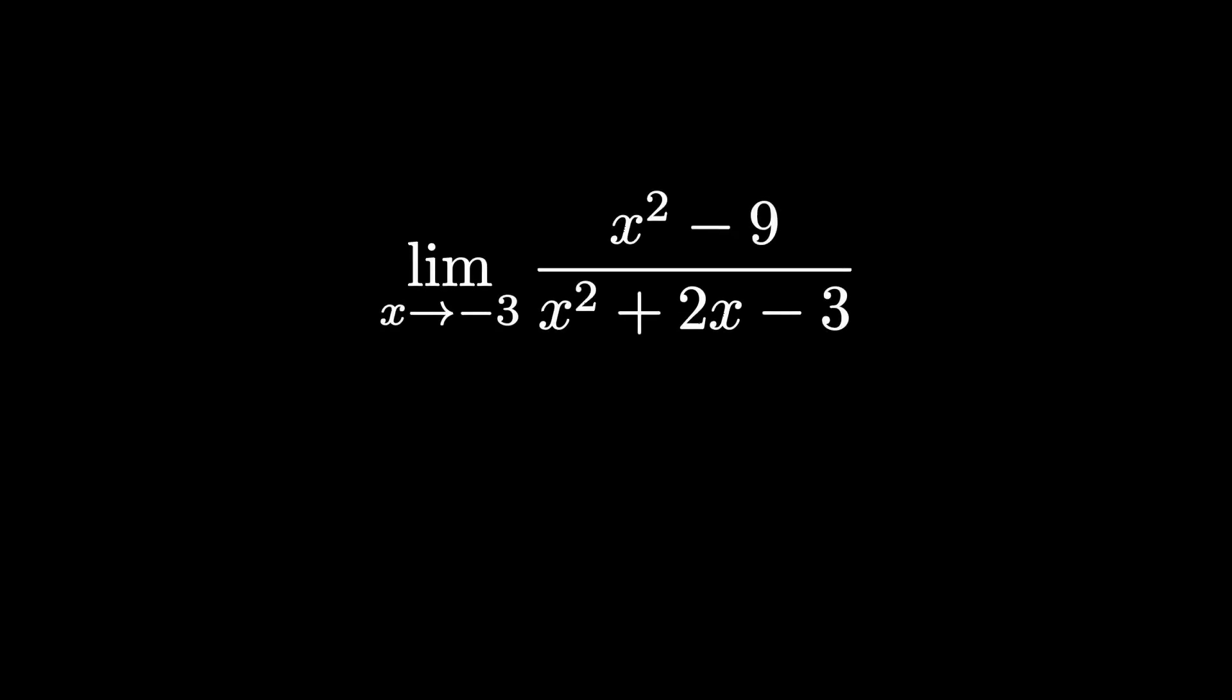All right, let's evaluate this limit. We have the limit as x approaches negative 3 of x squared minus 9 all over x squared plus 2x minus 3.